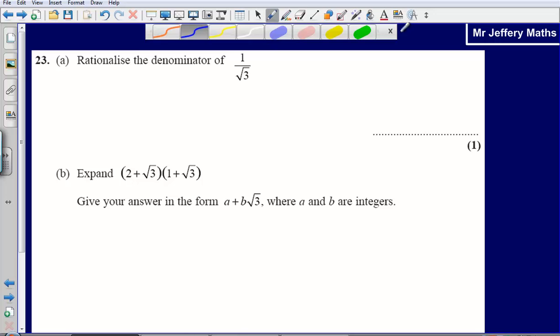This is fairly straightforward. What rationalize the denominator means is just to make the number on the bottom of my fraction a whole number or a non-surd, so a number that's not been square rooted.